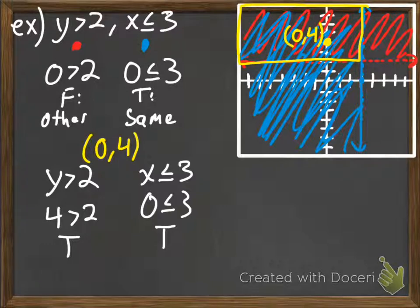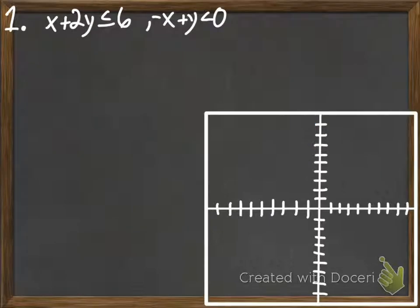So we graphed, we shaded, we looked at where the shading overlapped, and then we tested a point in the area to make sure we were right. So I want you to go ahead and with your group, pause the video and do that same thing here. So graph, shade, see where your shading overlaps, and then you need to pick a point in that area and test. So go ahead and pause the video and do that with your group now.